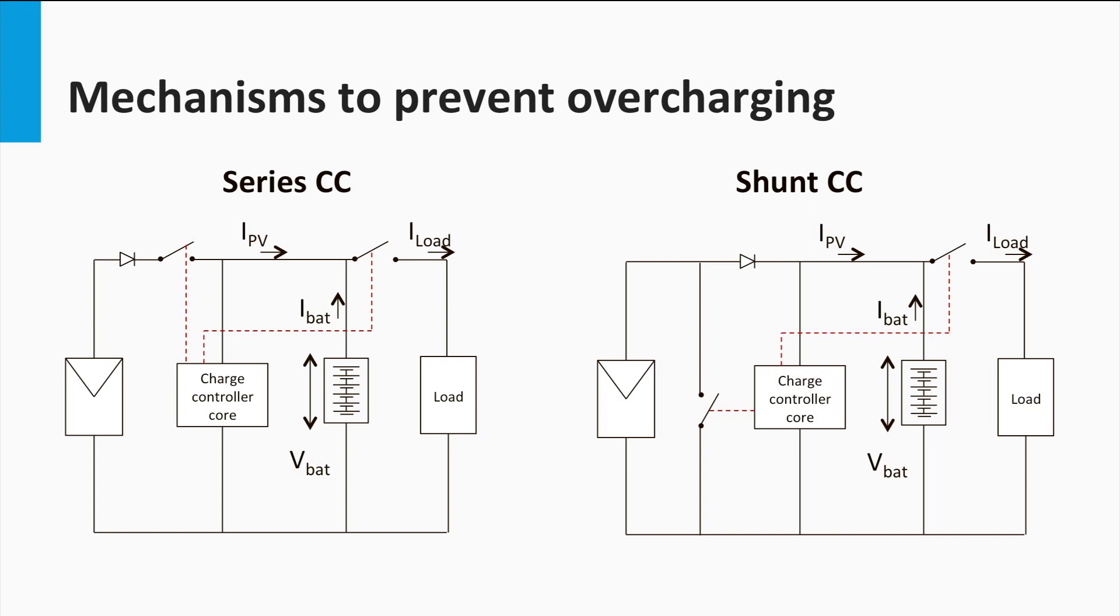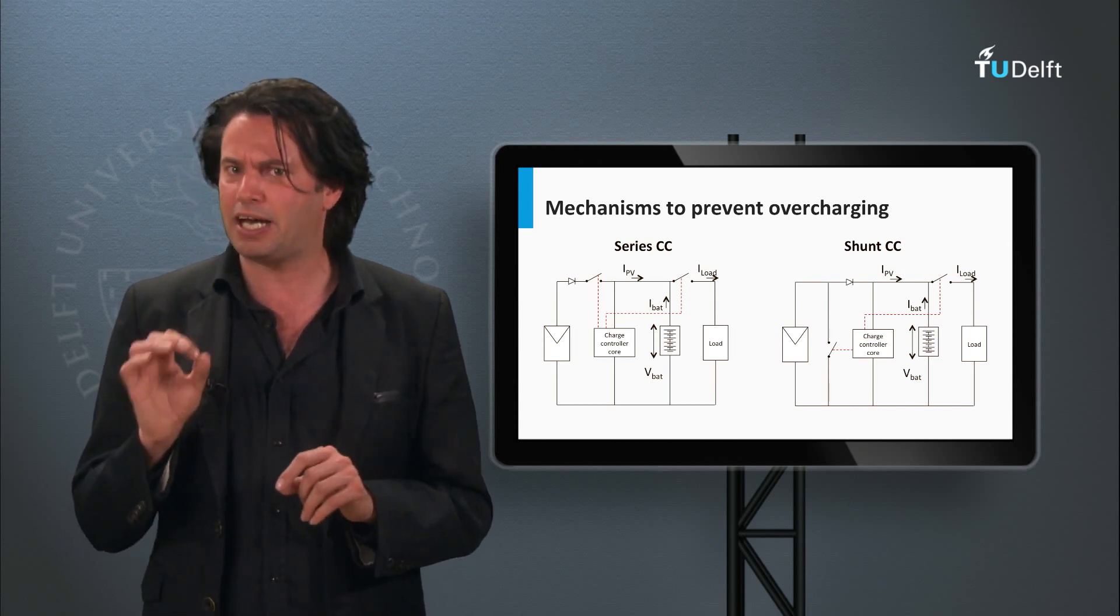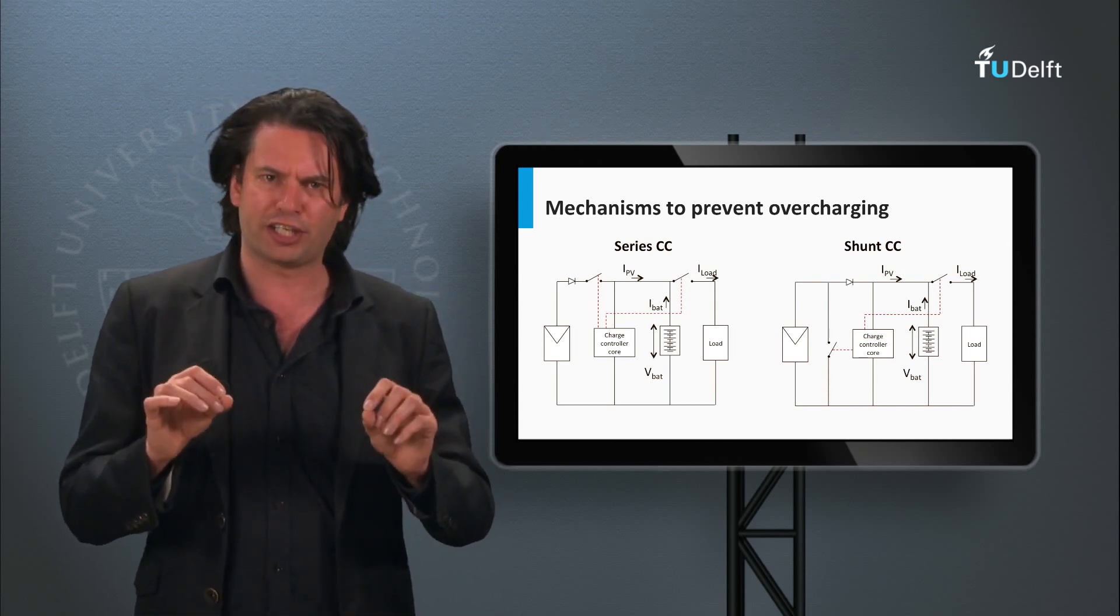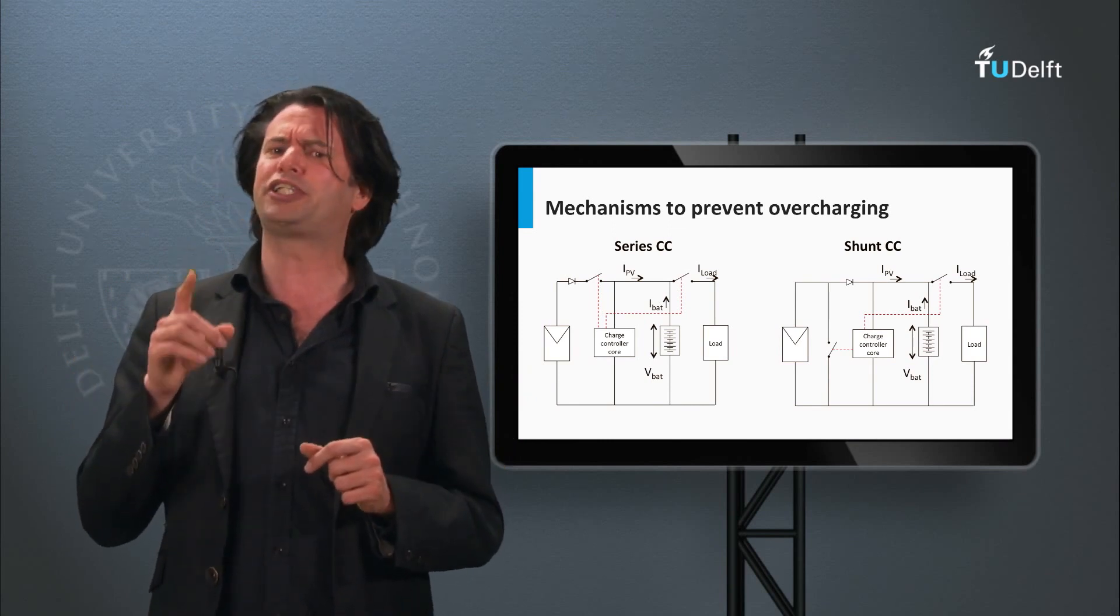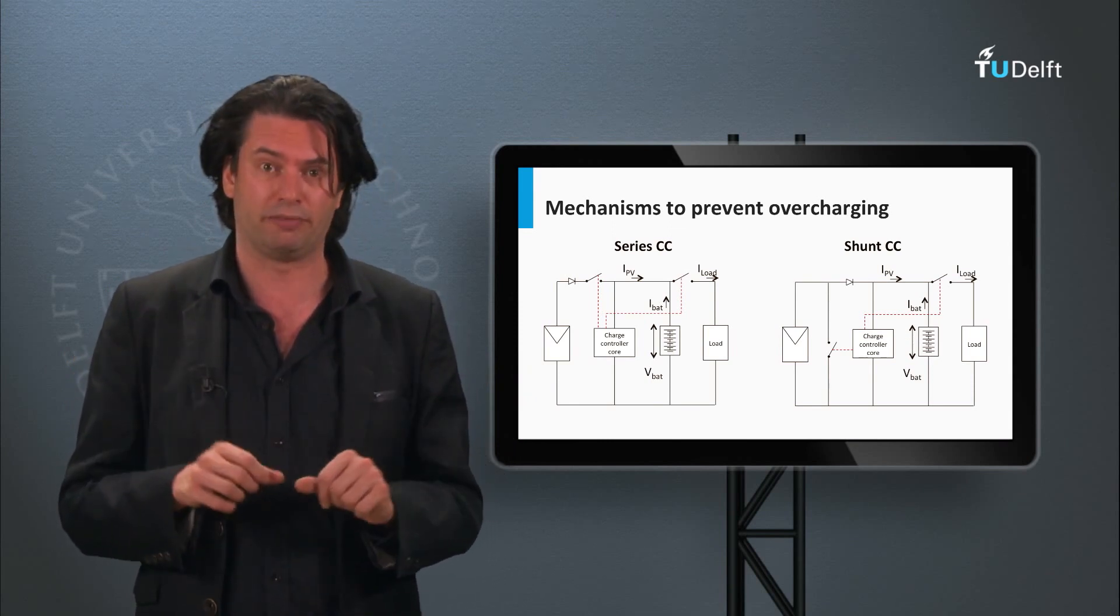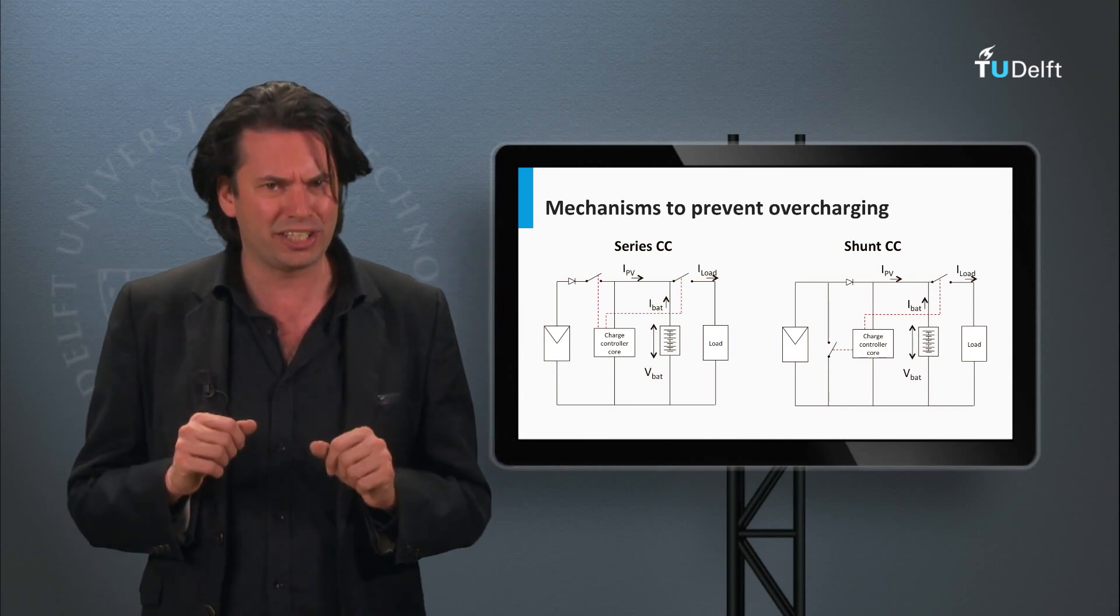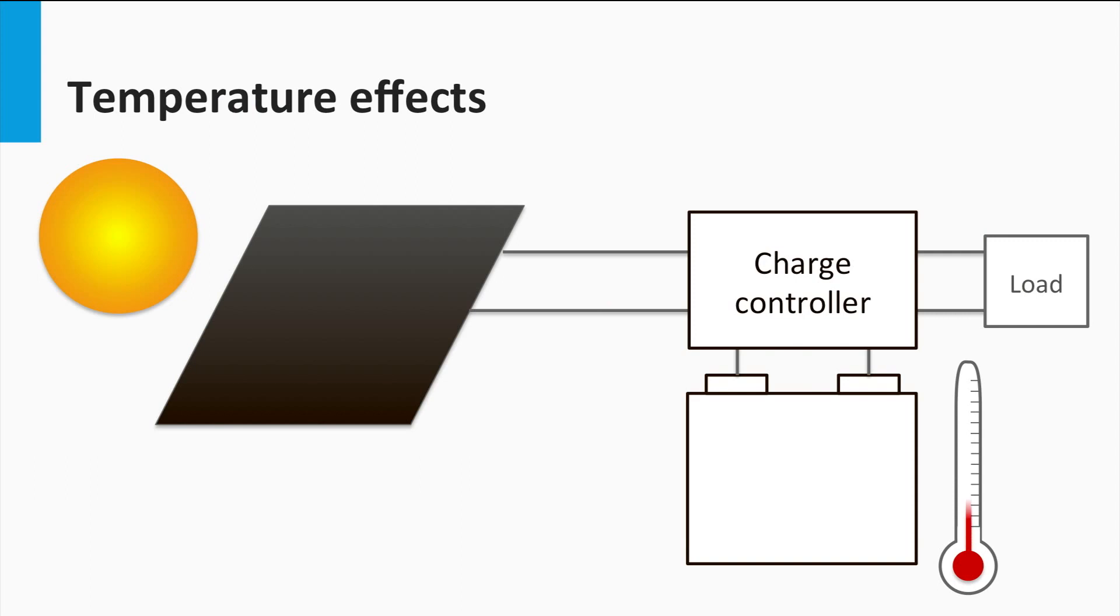We have seen in the previous block how temperature plays a crucial role in the functioning of the battery. Not only does temperature affect the lifespan of the battery, but it also changes its electrical parameters significantly. How does the charge controller handle this situation? A good charge controller these days comes with an in-built temperature sensor. Therefore, it compensates for temperature fluctuations and dynamically decides how the electrical specifications like operating voltage change with temperature. It successfully keeps the battery operating in the desired range of voltages depending on the temperature.